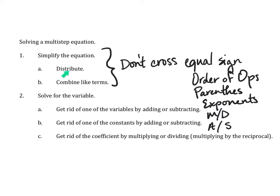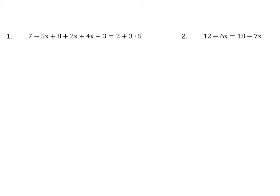So when you're simplifying on each side of the equal sign, keep that order of operations in mind if it is applicable. We didn't have anything to distribute. Our simplification mostly included combining like terms, and then on the right side of the equation, the order of operations. So, getting rid of the variables by adding or subtracting. Get rid of one of the constants by adding or subtracting.